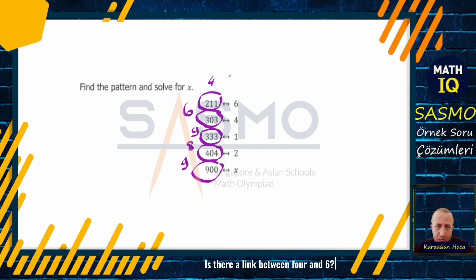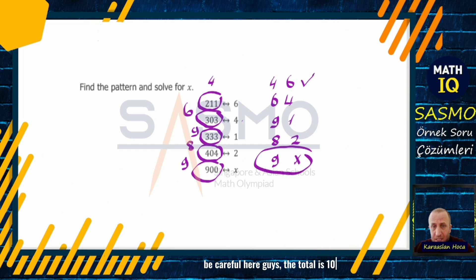Is there a link between 4 and 6? Let's write side by side. 6 and 4, look what came next to 6 and 4: 9. 1 came next to 8. 2. Well, x. 1 next to 9. We are looking for x right now. Be careful here guys. The total is 10. Yes, did you see they all made 10? Then the event is over. X here, 10, what to do? It has to be 1 instead of x for the result to be 10.